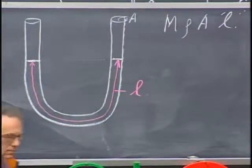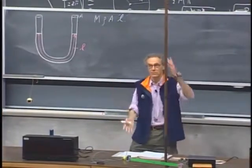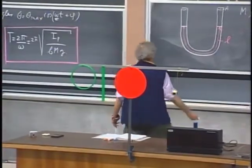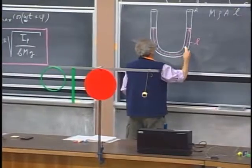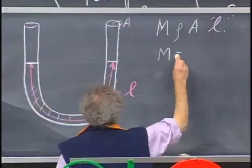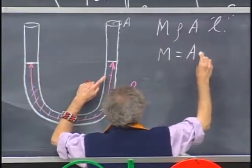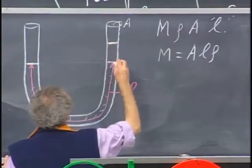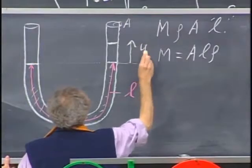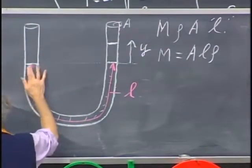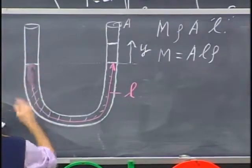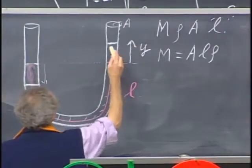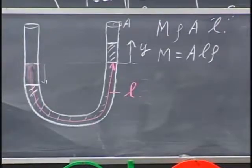I'm going to offset the liquid and I want to see it oscillate, and I want to see whether I can calculate the period of the oscillation. I'm going to offset it so that this is higher over a distance y, and this then is lower over a distance y. So the liquid now is here, and then I release it and it will start to oscillate.